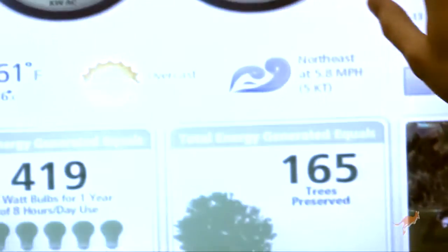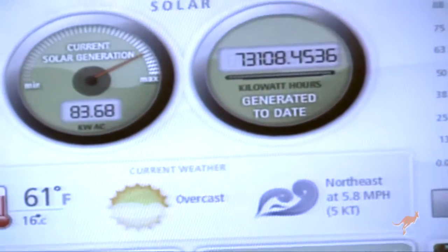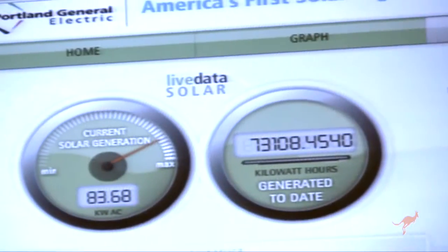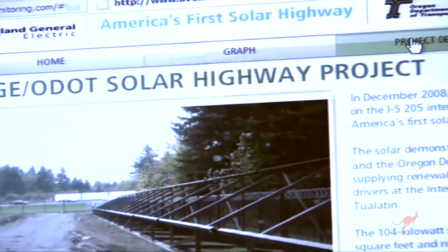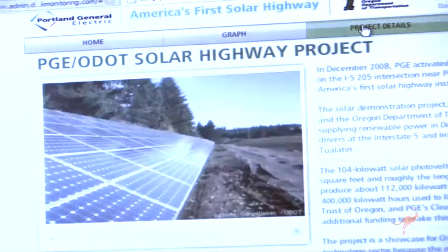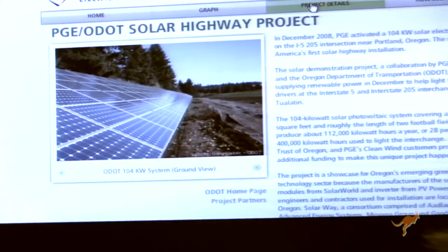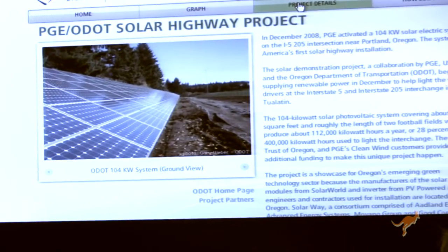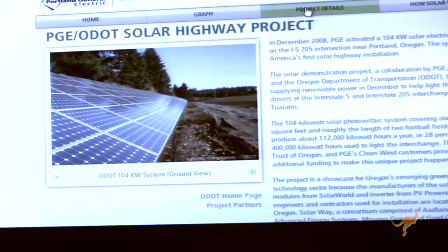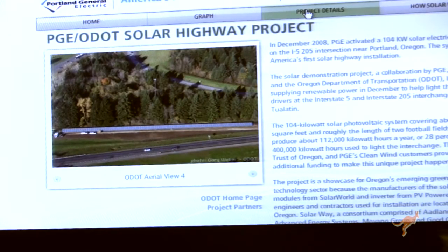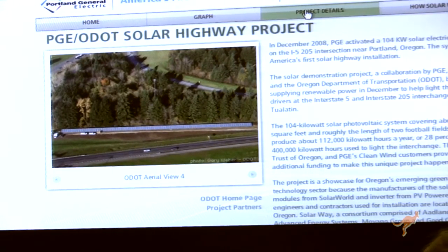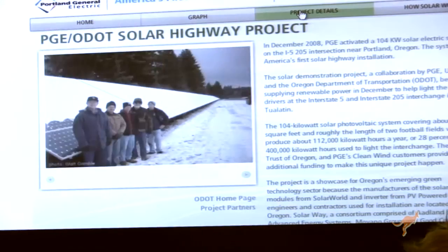Up here we have a couple of different tabs — a graph tab and a project details tab. The project details tab gives the client a green PR tool, allowing them to show the public what they've done with their installation, providing a face for the project and showing their contribution to the community.